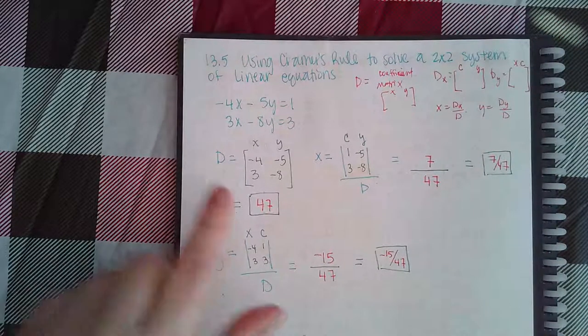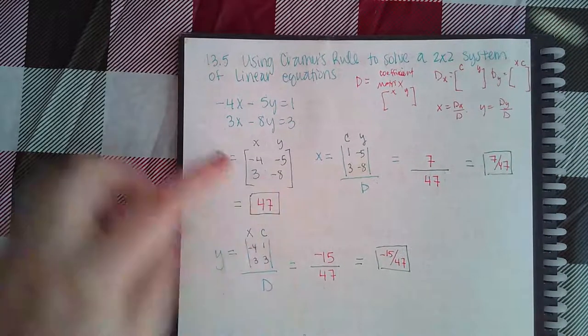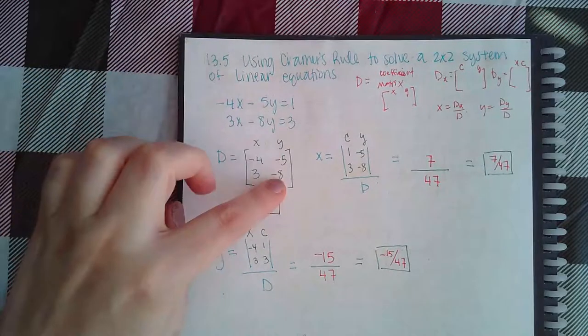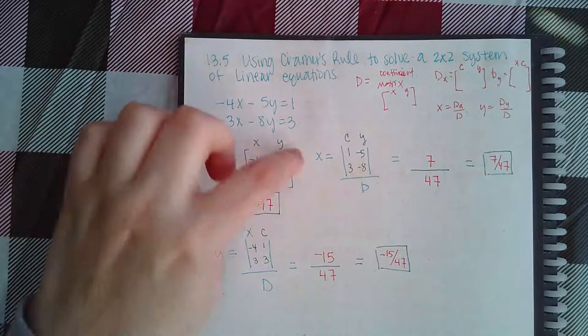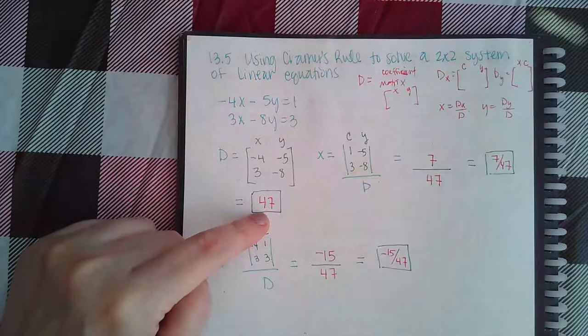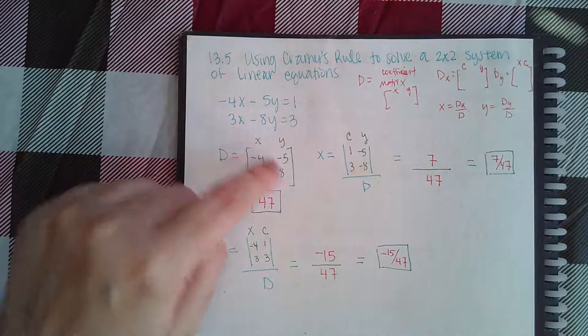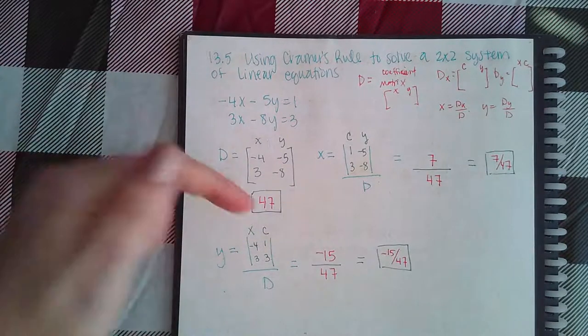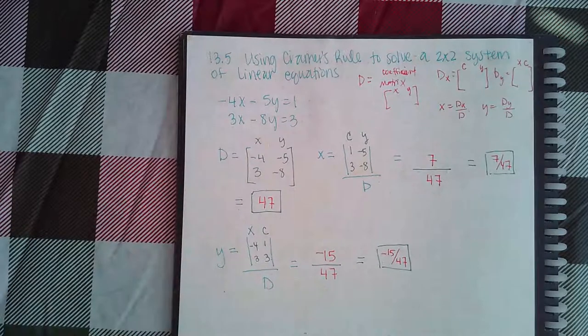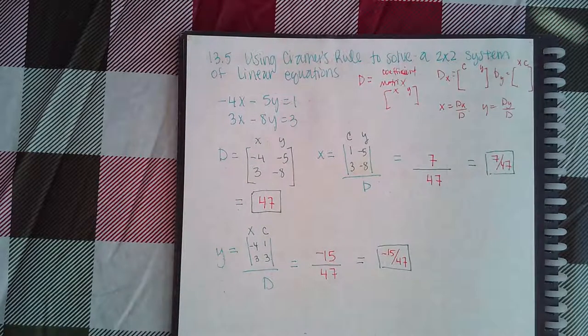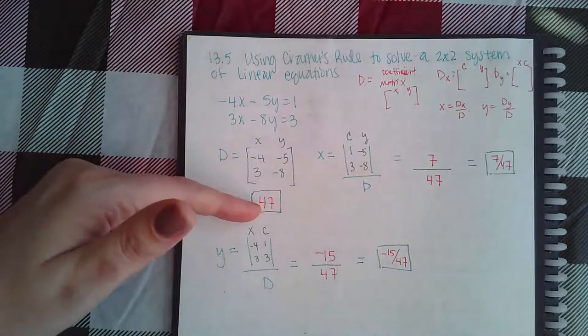So I'm going to go ahead and go through. The first one I'd ask you for is D. So I took all of the coefficients of the matrix, put them in here, I cross-multiplied, and I ended up getting 47. So I did positive 32 minus 15, which is actually positive 32 plus 15, and that's where I got 47 from.